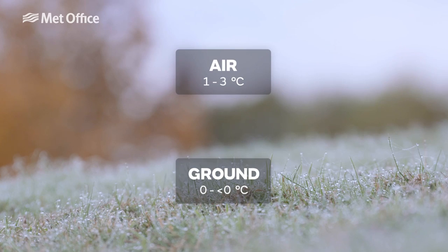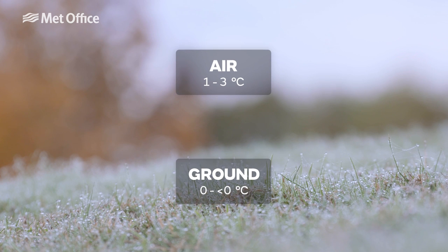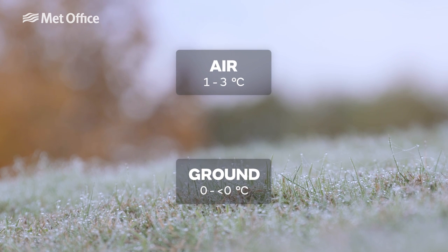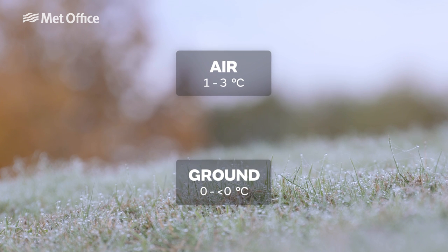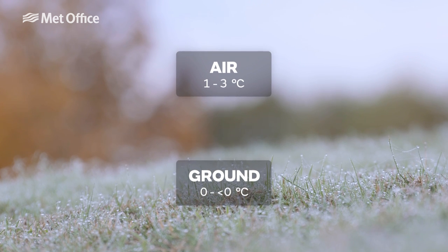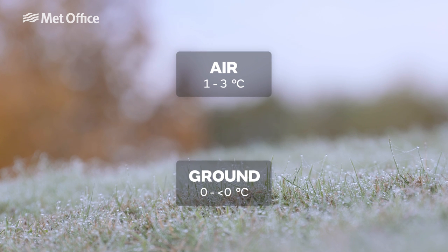A ground frost refers to frosty conditions on the ground, where the surface has cooled to freezing or below. Often a ground frost will occur without there being an air frost. In this scenario, the air temperature would probably be somewhere between 1 and 3 degrees.